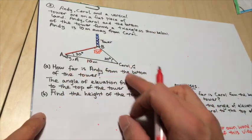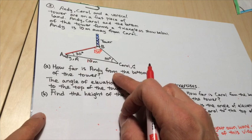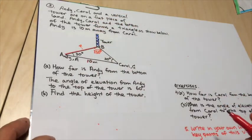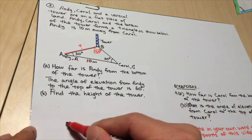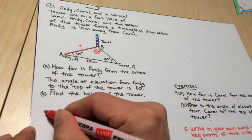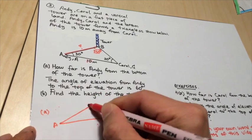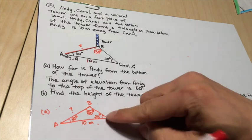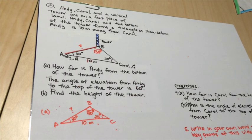So first what we need to find is how far is Andy from the bottom of the tower. So basically this AB. AB is needed. So let's first draw a diagram, an appropriate diagram. So A, this is A, this is B. So in order to find AB, obviously, we need to use the sine rule.